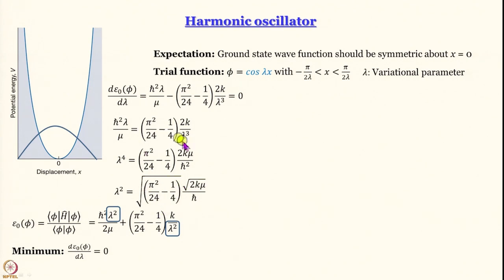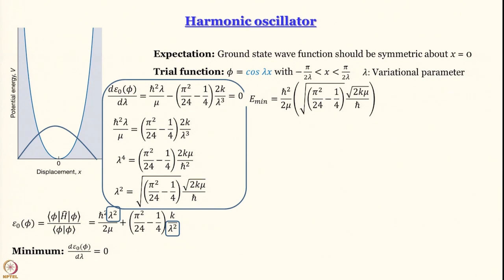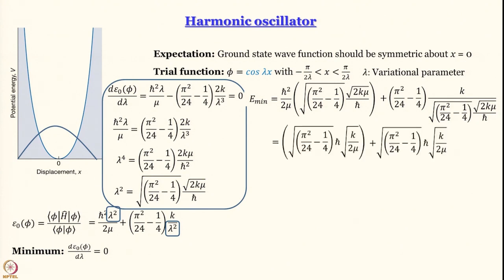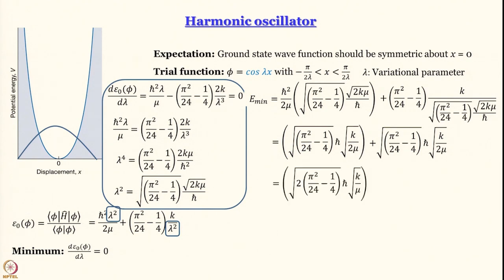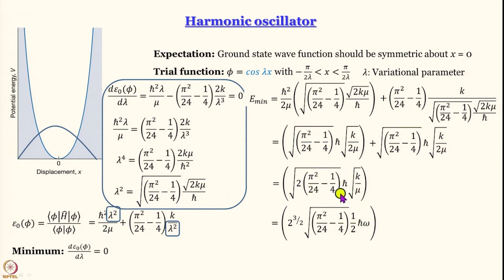We substitute the optimal λ and find E_min = ℏ²/(2μ) · √(π²/24 − 1/4) · √(2kμ/ℏ) + π²/24. Simplifying, we recognize √(k/(2μ)) = ω, the angular frequency of oscillation of the harmonic oscillator. The expression boils down to 2^(3/2)·√(π²/24 − 1/4) times ½ℏω.